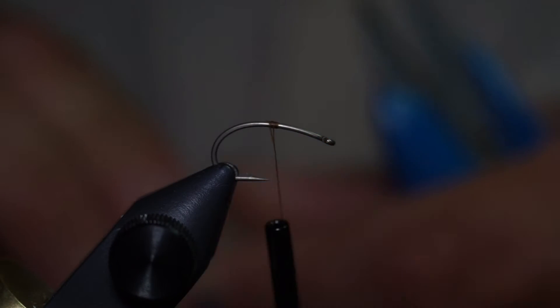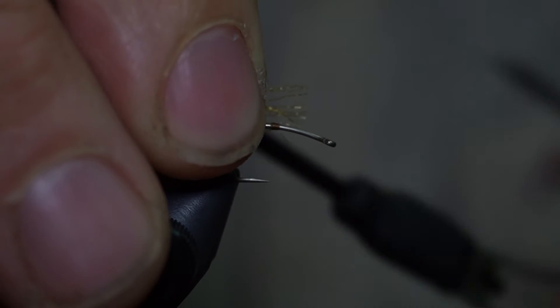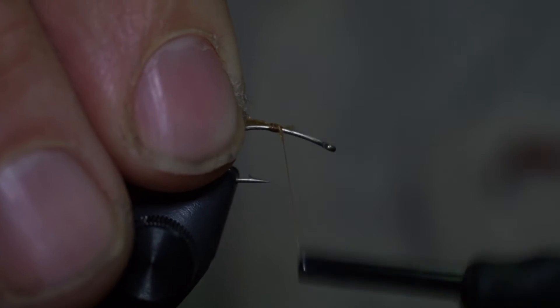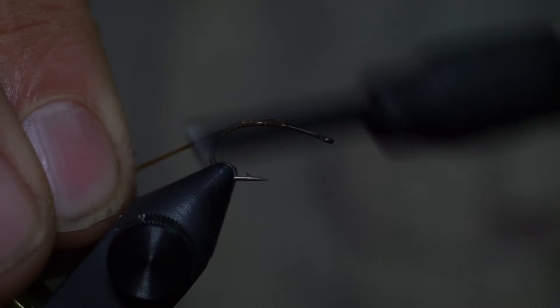And then we tie in the tail, or the shuck. We use the PMD shuck, actually what it's called, Antron. Tie that out the back for the tail.